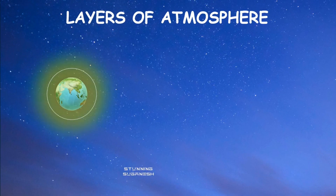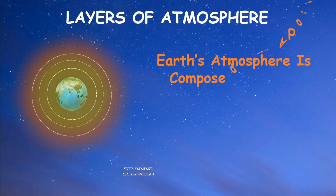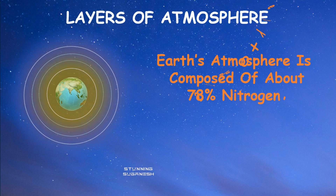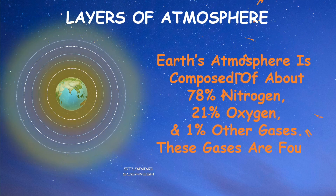Earth's atmosphere is composed of about 78% nitrogen, 21% oxygen, and 1% other gases. These gases are found in layers.